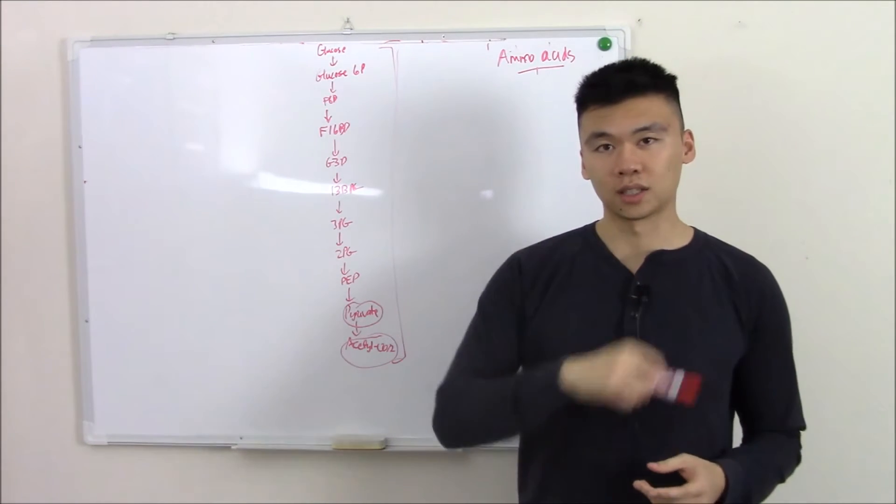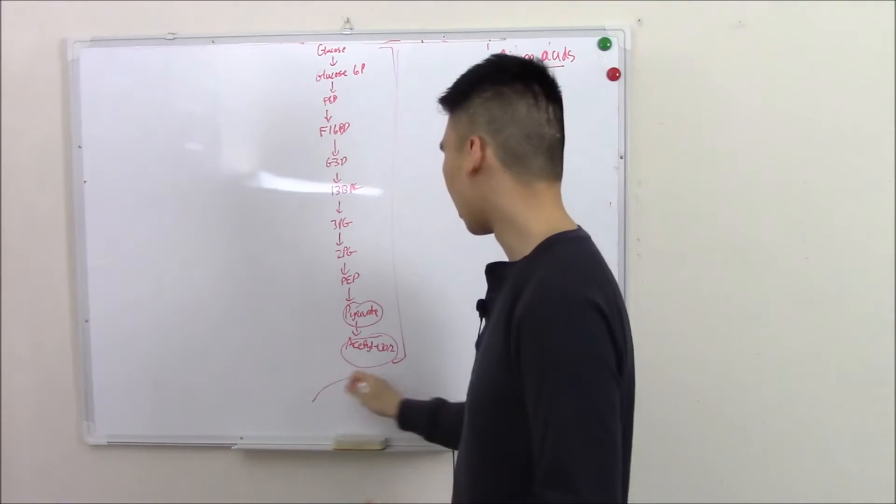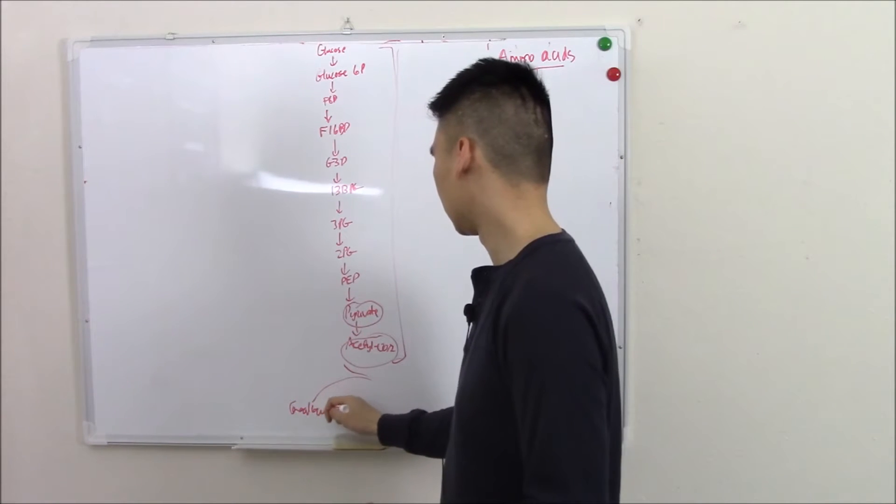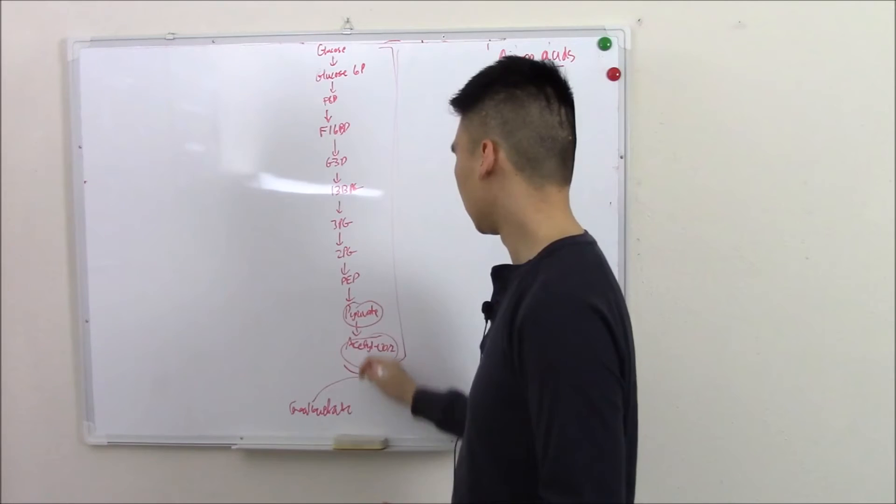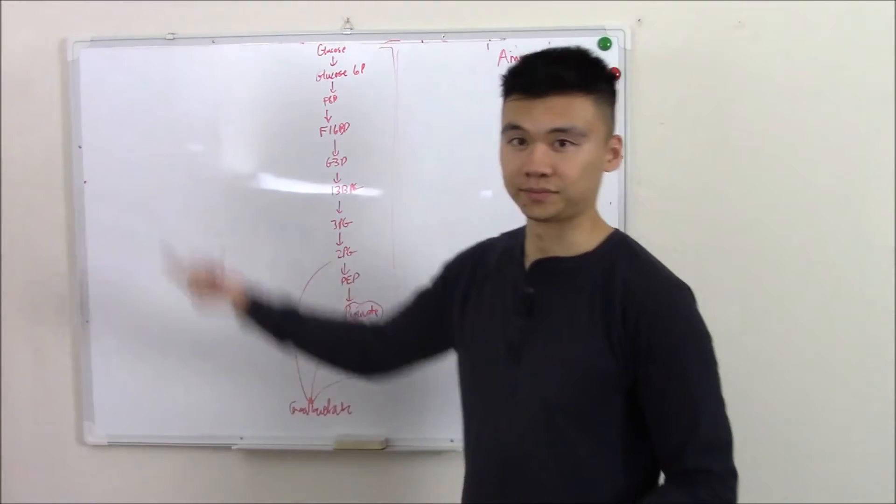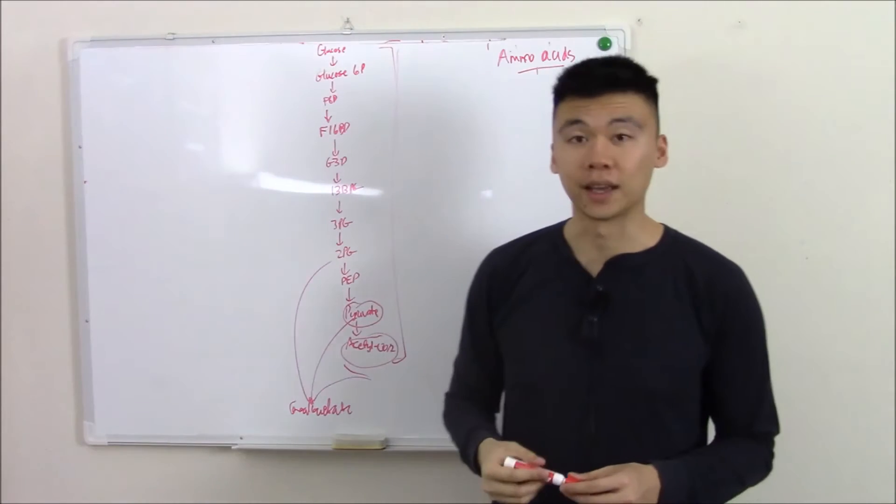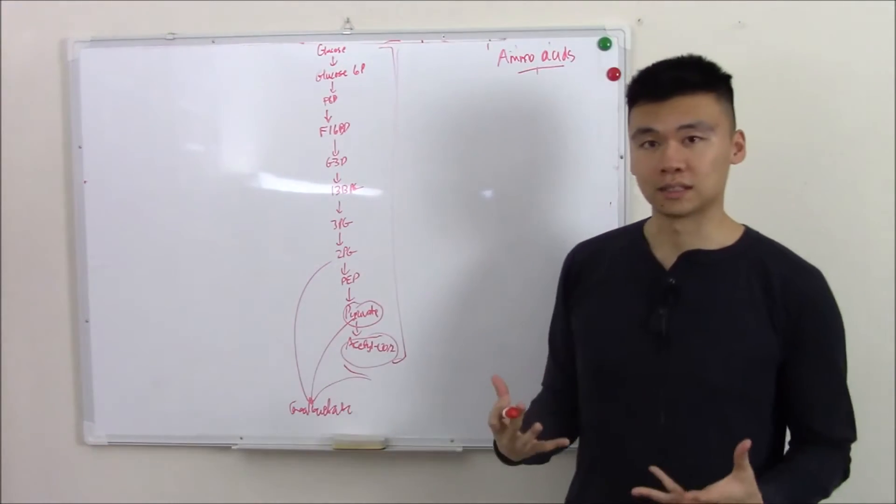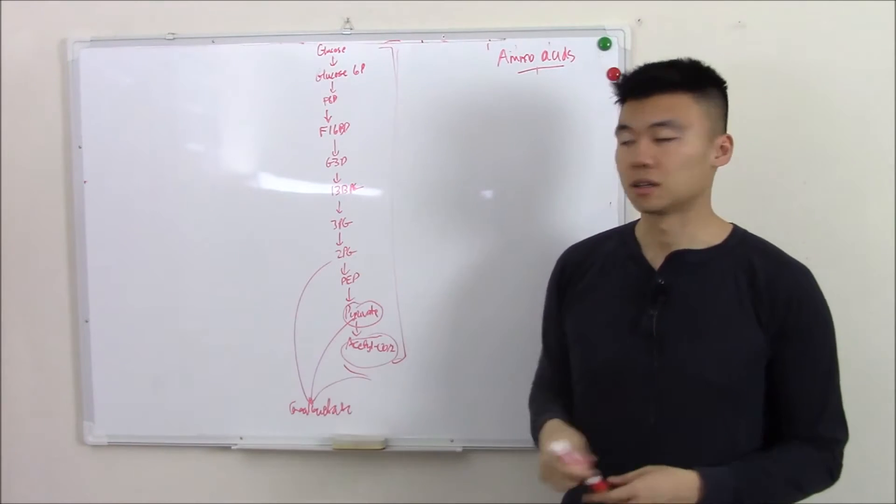Now do you remember gluconeogenesis? That's the one that catapulted down to oxaloacetate, bounced back up, and went all the way to make glucose. So that is how proteins fit in to our backbone.